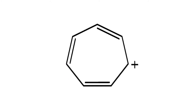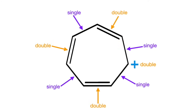Now we have an example of a planar cyclic with a positive charge. A positive charge indicates a missing pair of electrons, which is essentially a vacancy for a pair of pi electrons, meaning we do consider positive charges to complete conjugation. So just like with negative charges, call the positive charge double and check for the double-single alternating pattern around the ring.